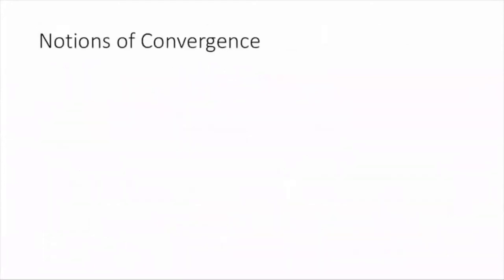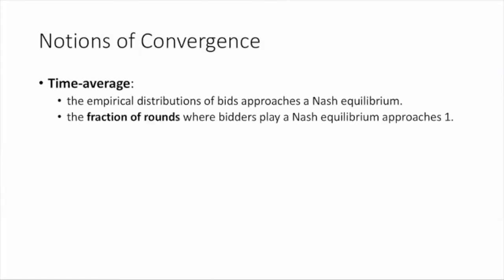Before I dive into our results, let me introduce two notions of convergence to Nash equilibrium. Previous results on convergence of learning dynamics to Nash equilibrium in games are mostly in an average sense. Our notion of time average convergence says the bidders play a Nash equilibrium in almost every round, which is stronger than convergence of empirical distributions. But time average convergence fails to capture the full picture since the bidder's last iterate strategy may not converge.